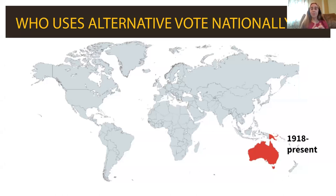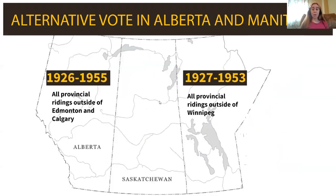Who uses the alternative vote? At the national level, only two countries use it: Australia and Papua New Guinea. Australia has been using alternative vote for about 110 years. We also have experience from Canada — it was used at a provincial level in all ridings outside Edmonton, Calgary, and Winnipeg in Alberta and Manitoba for a period of 30 years. That's plenty of time to get an idea of its effects.